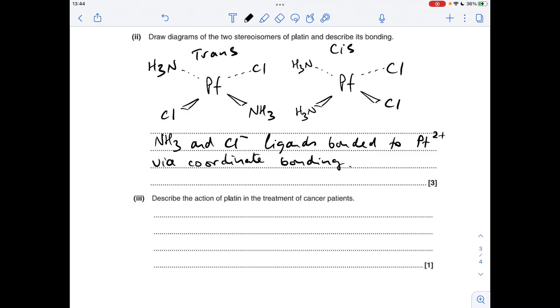The last part of F, describe the action of platin in the treatment of cancer patients. Remember it's the cis isomer that is used in cancer treatment. Cisplatin has the right shape to bind to the DNA of cancer cells and that stops them from dividing.